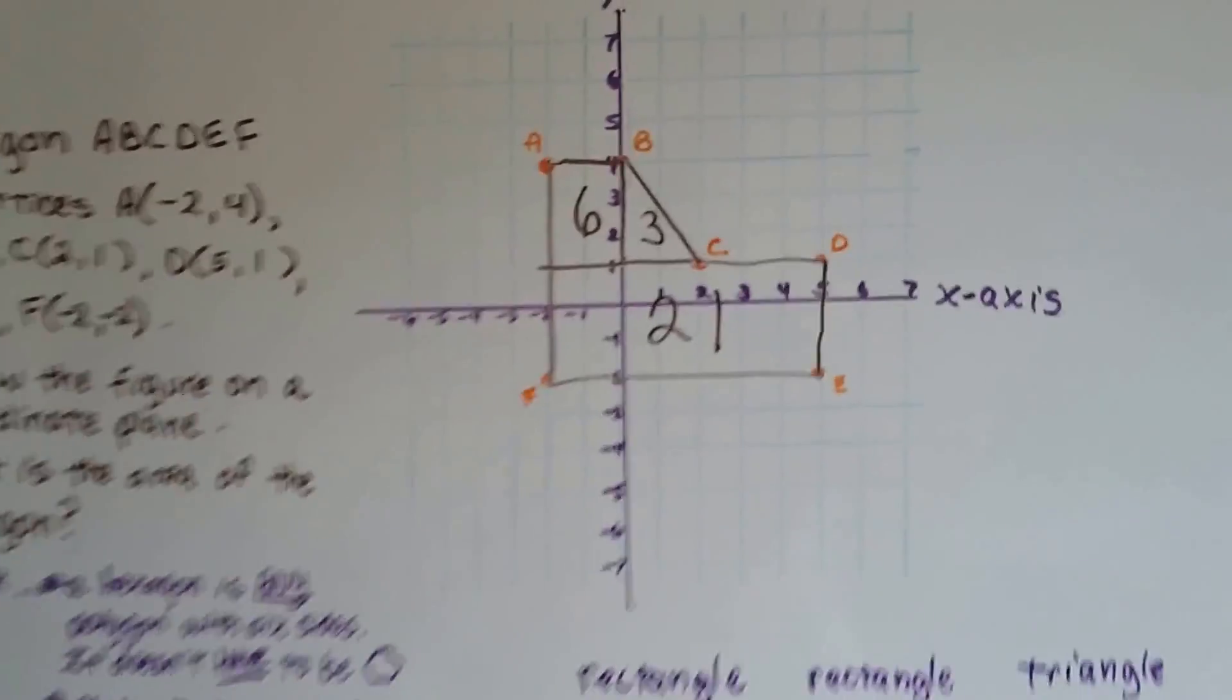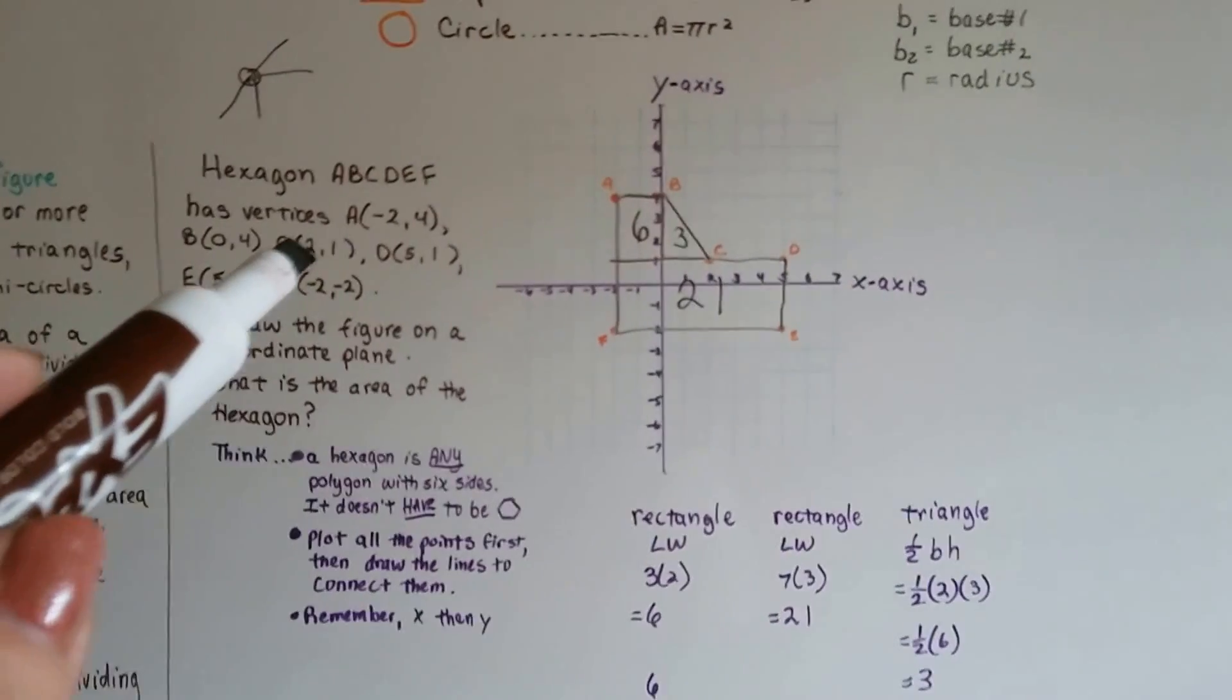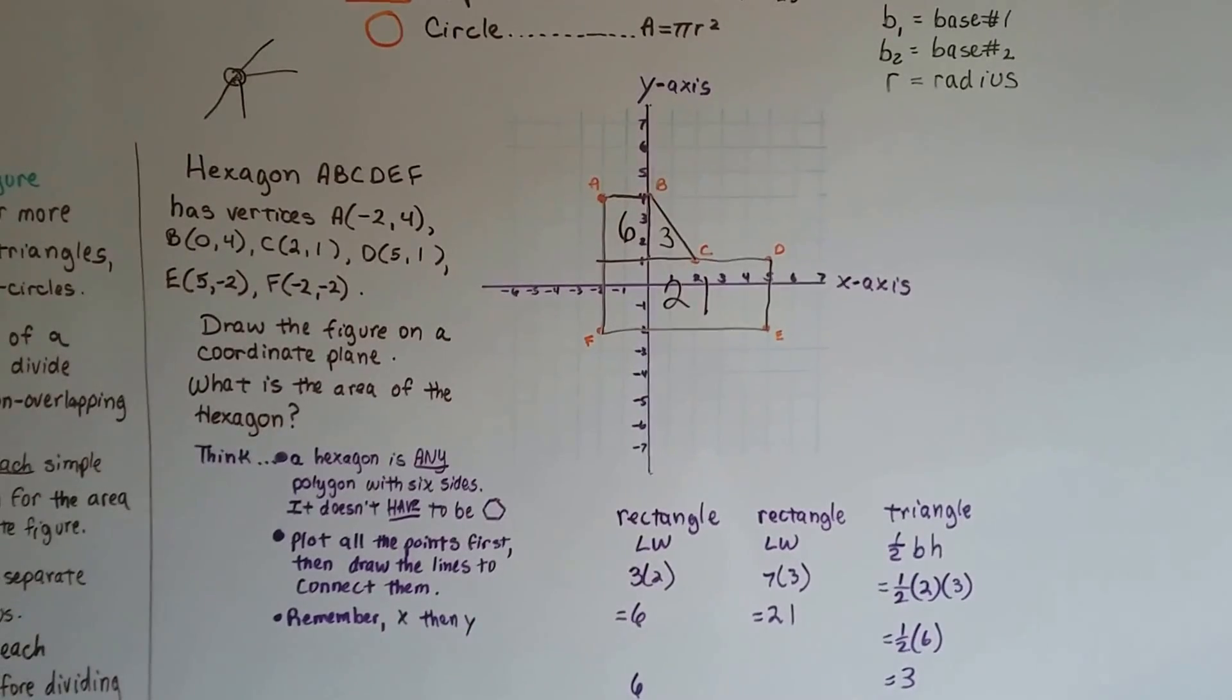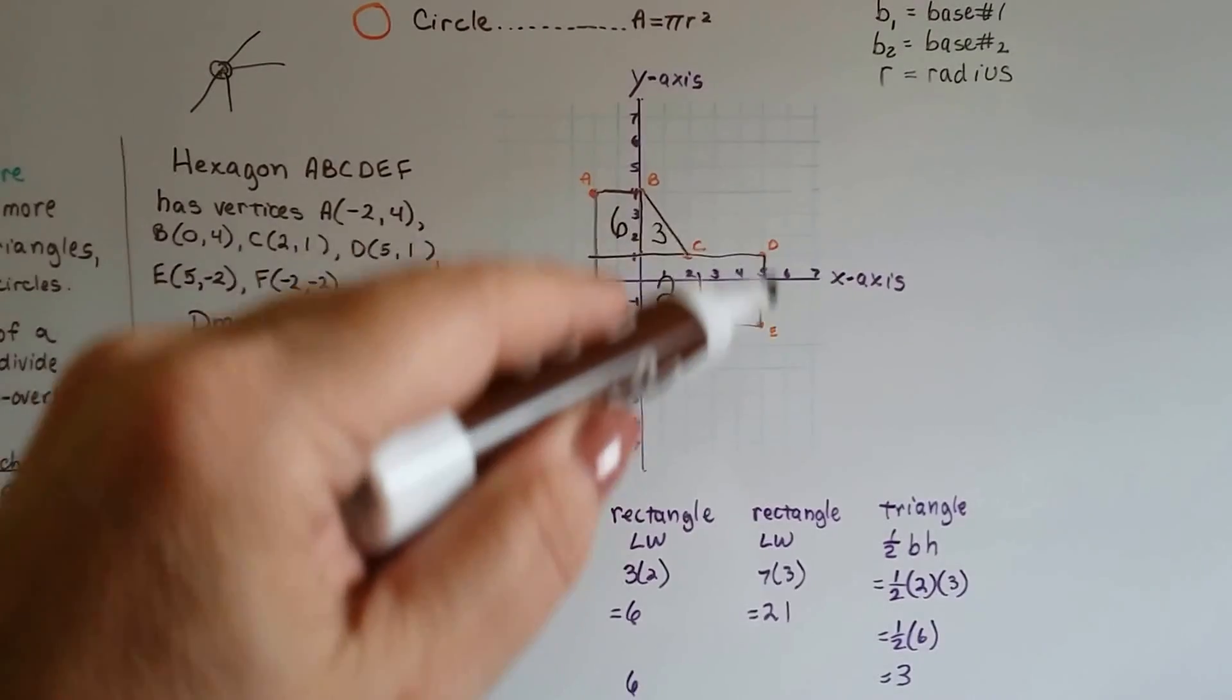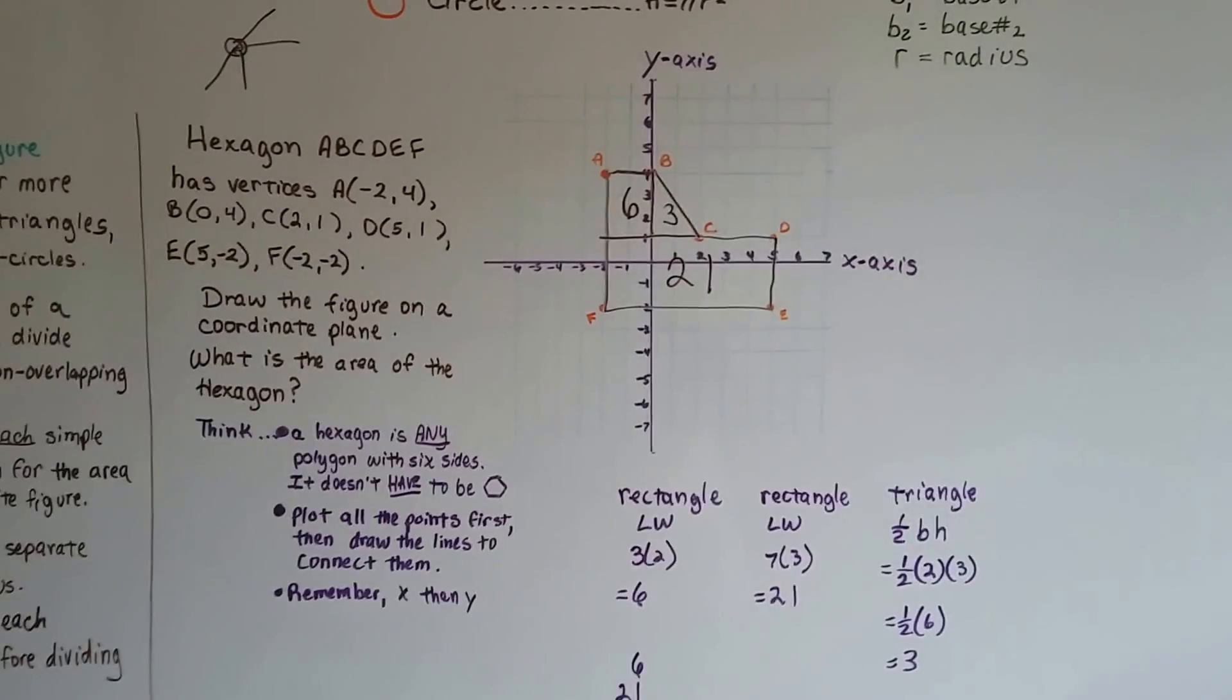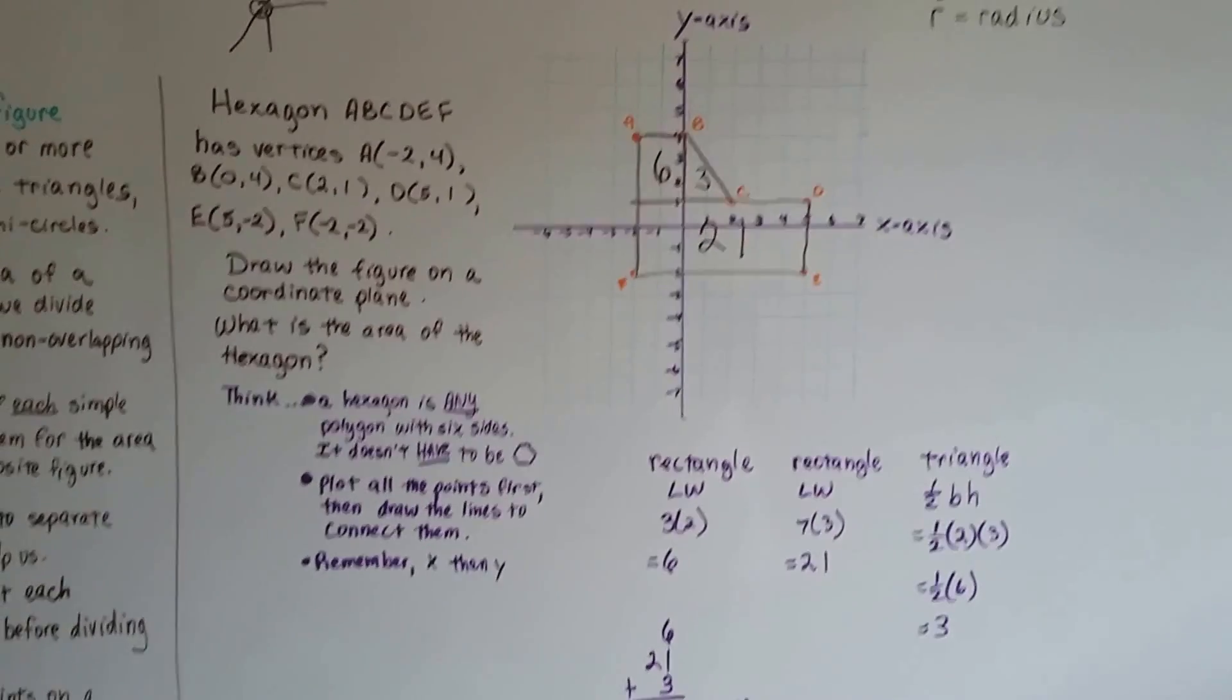That wasn't that hard, was it? All you have to remember is, when you're plotting the points for these coordinate pairs in the parentheses here, that x is first, and then y. And just be very careful as you do it, and then connect all your dots for your outer perimeter. And you should be able to break up your composite figure into different shapes and figure out what the area is.